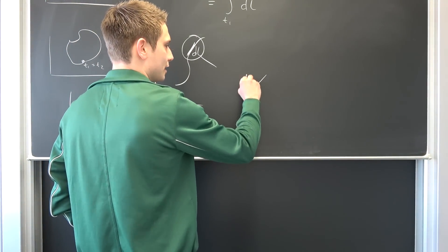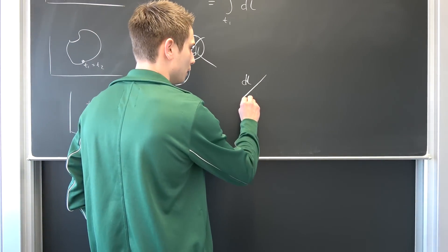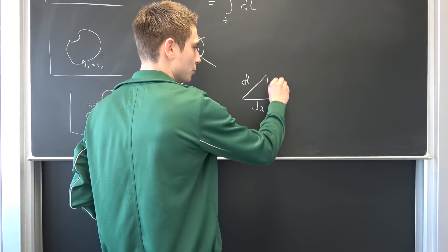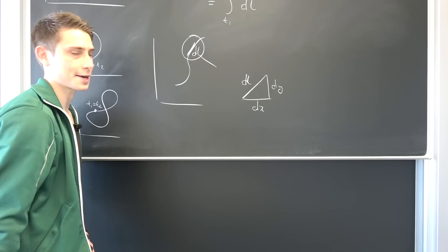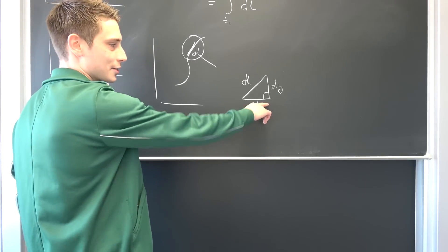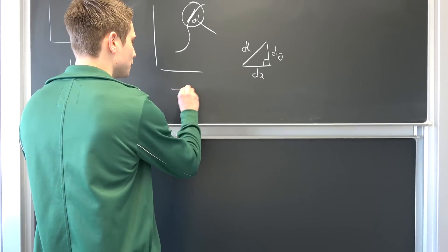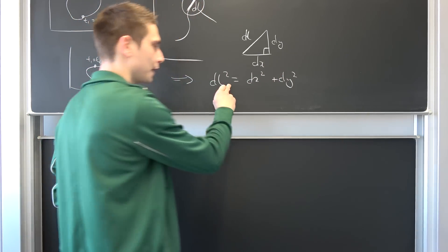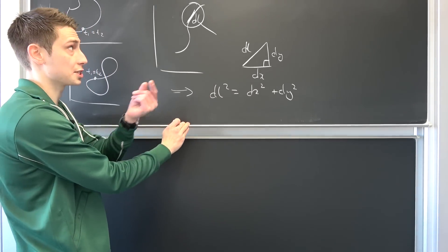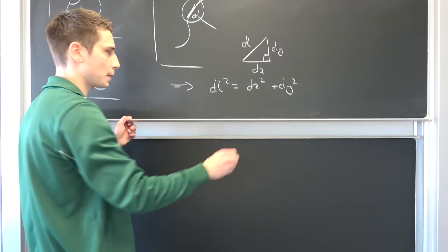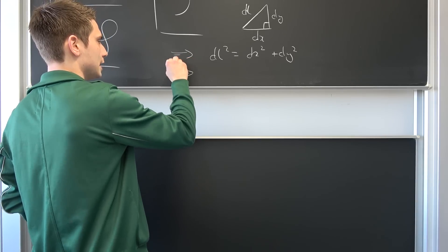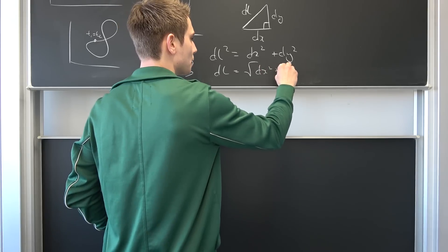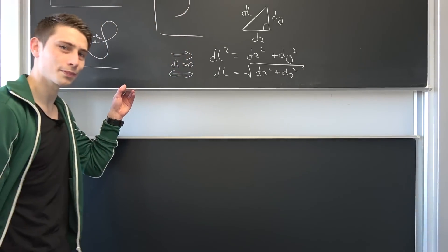So we are going to have this dL segment right here. It's going to consist of one part: dx — that's a really, really small portion of the x-axis — and one part dy, a really, really small portion of the y-axis. As you might notice, we can always construct the right triangle. Meaning we can use Papa Pythagoras to get that dL squared is nothing but dx squared plus dy squared. If we take the square root on both sides — and dL is positive, it's a line segment, we are dealing with a metric here, so that's bound to be positive — dL is nothing but the square root of dx squared plus dy squared. Okay, coolio.